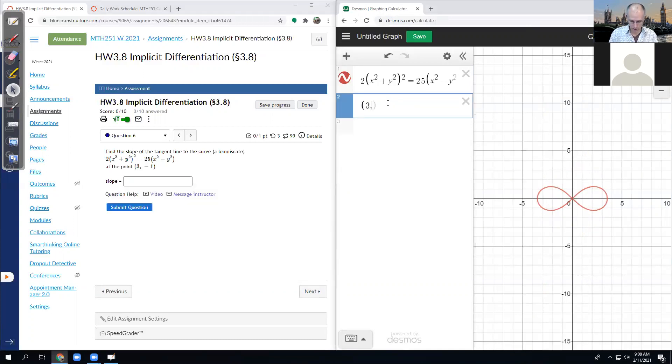So 3, not negative 3, negative 1. So at that point right there. Can we find the tangent line? Let's do it. All right. Let's see if I can copy that correctly.